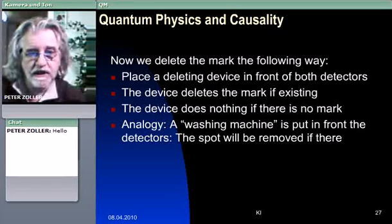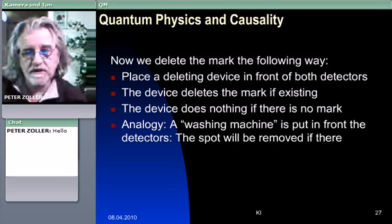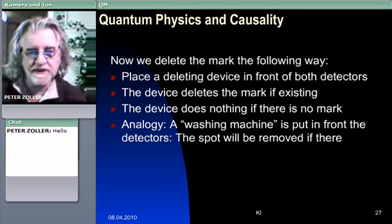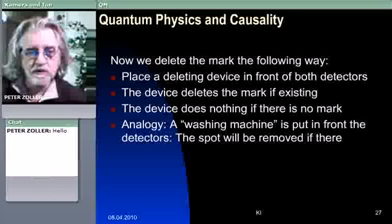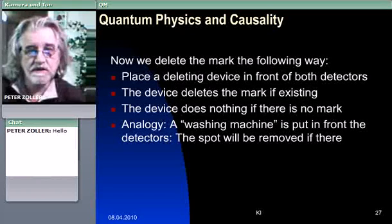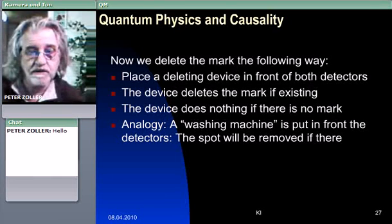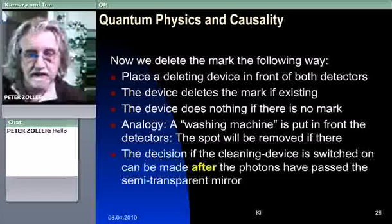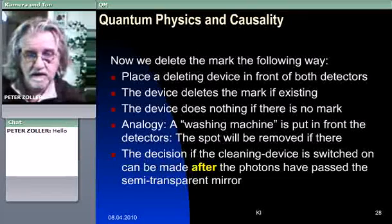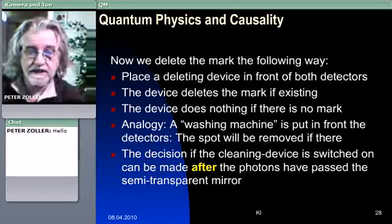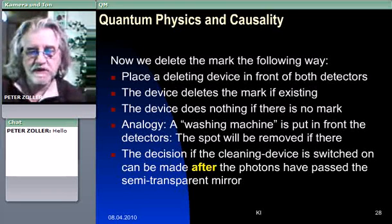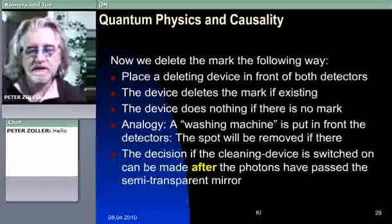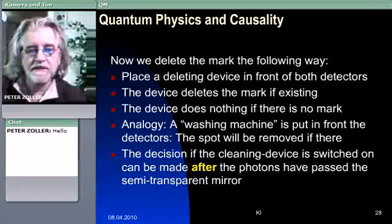Now, let's consider our analogy again. This means that a washing machine is put in front of the detectors, which will remove the red spot if it is there. If there is nothing, then cleaner than clean couldn't be. So it stays, and if there were a red spot, then it is cleaned. And it's important to say that the decision if this clearing device is switched on can be made after the photons have passed the semi-transparent mirror.